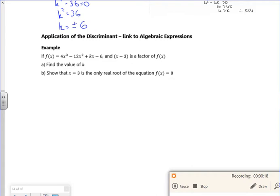So it says if f(x) is 4x cubed minus 12x squared plus kx minus 6, and x minus 3 is a factor, find the value for k. So part a, I know that f(3) must be 0 if x minus 3 is a factor.